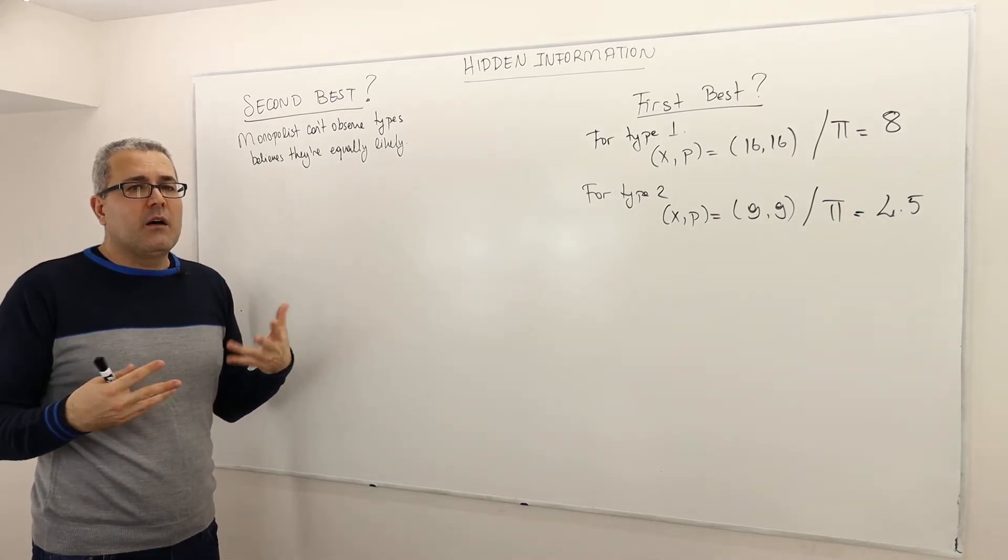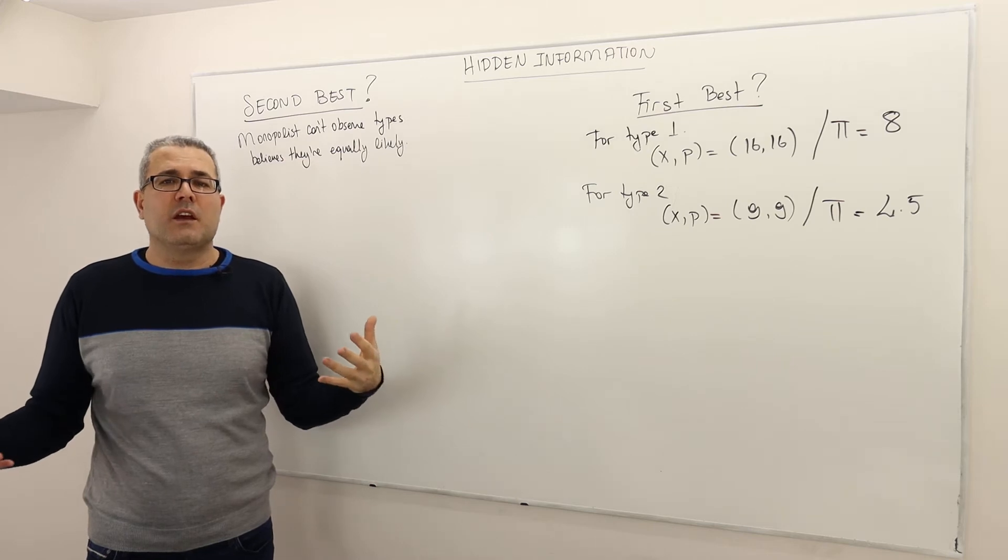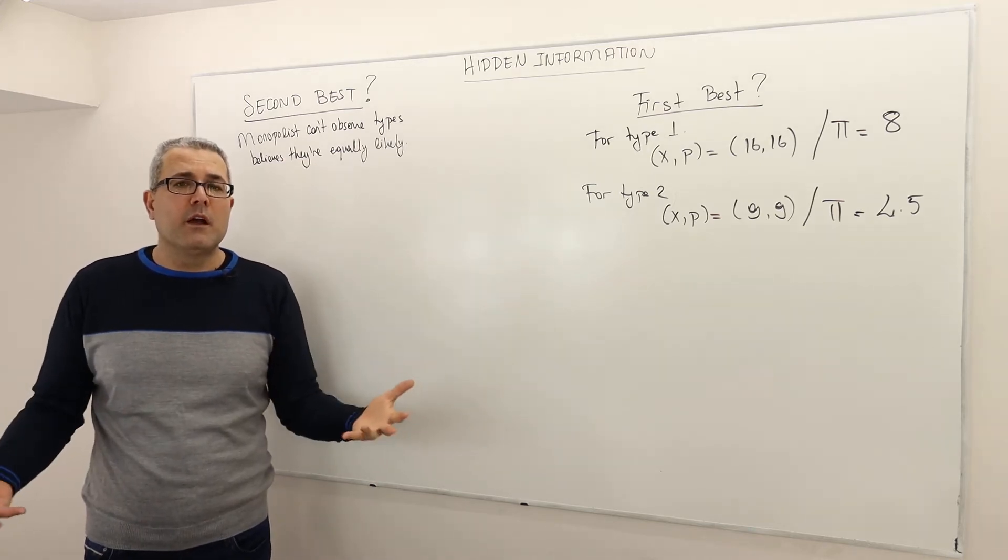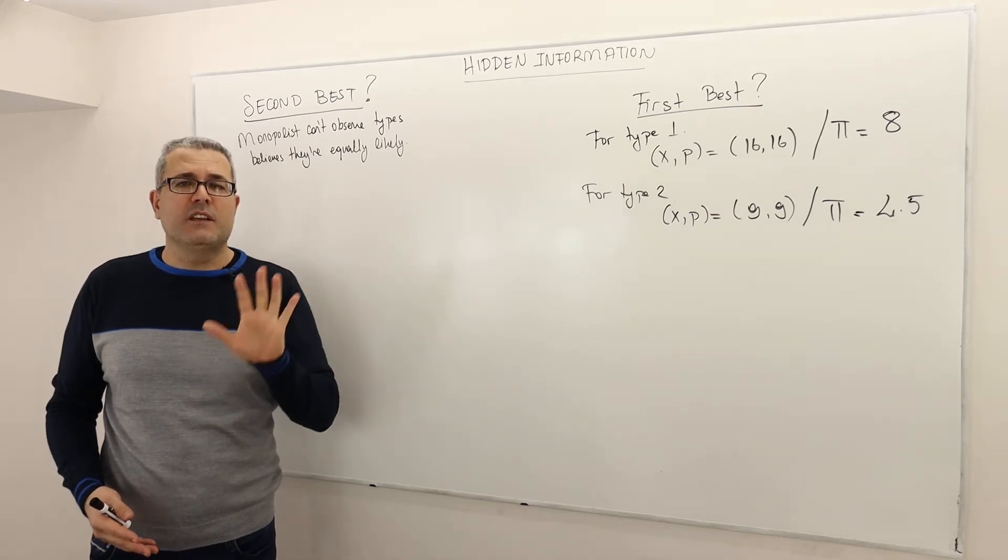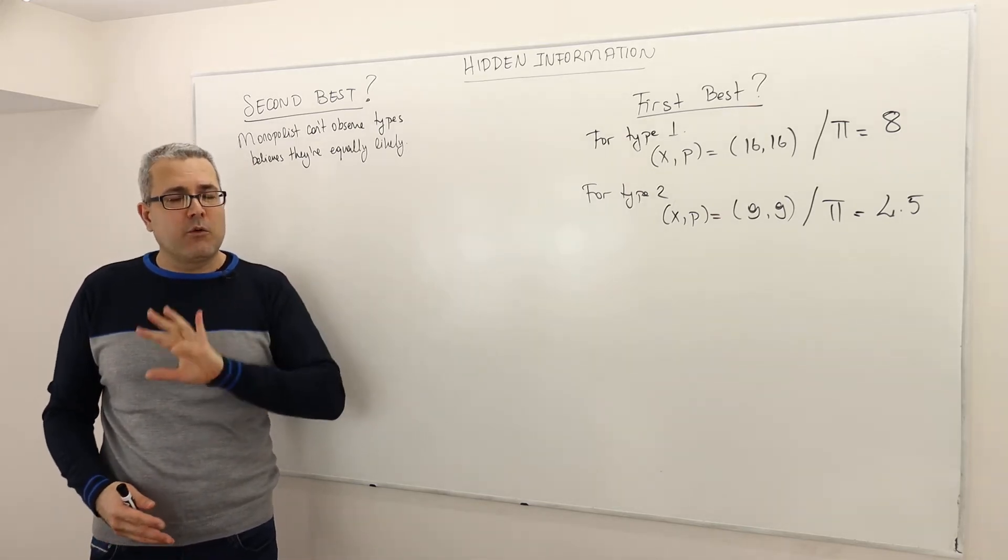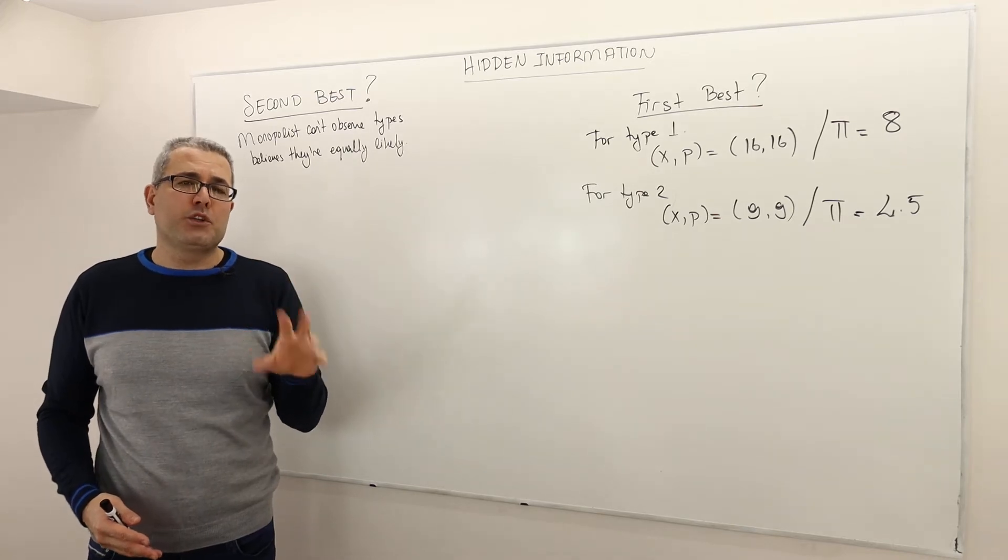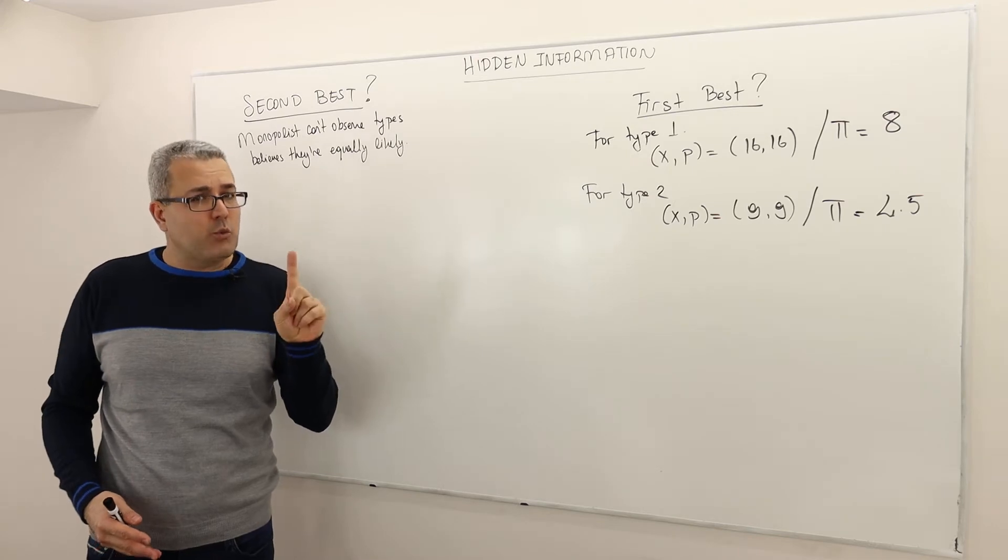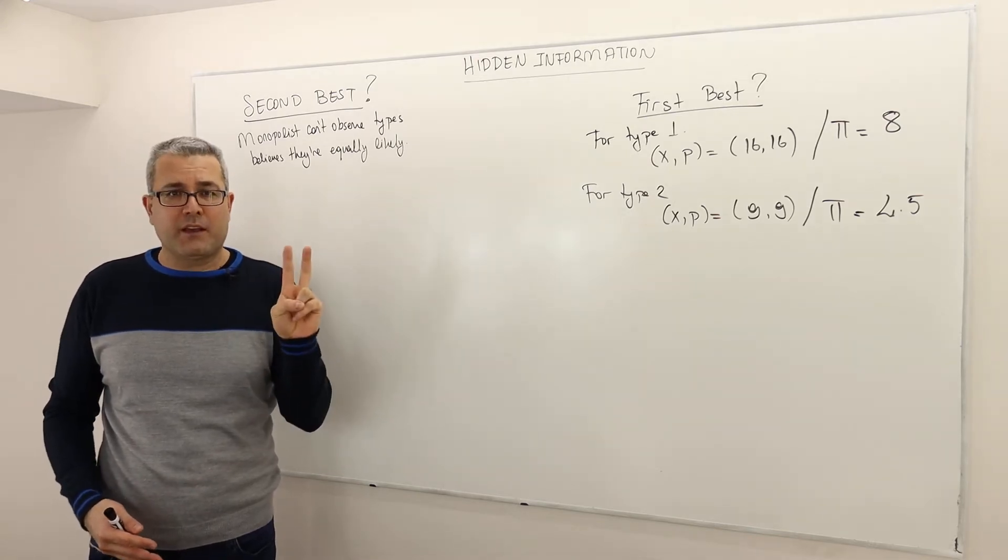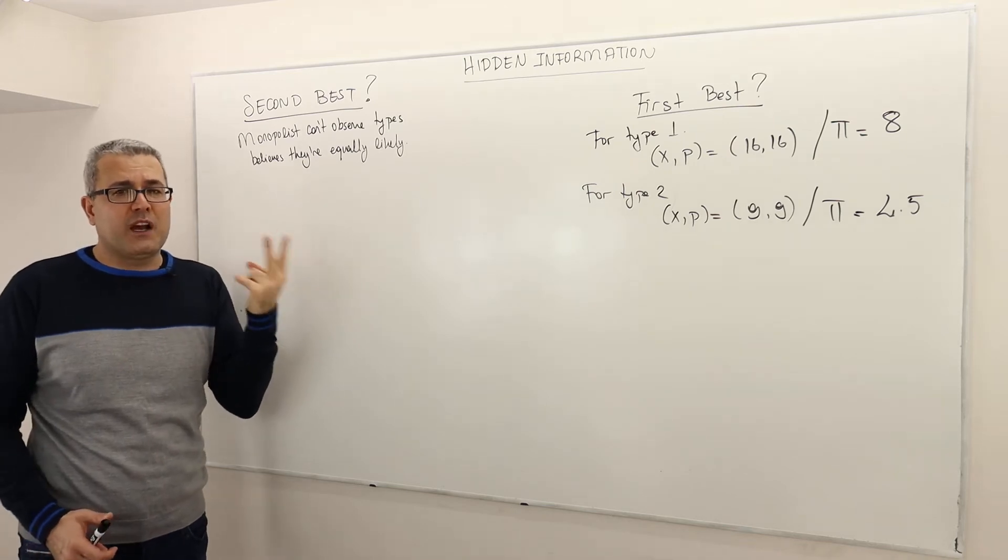So the question is, obviously the first question is how many packages should monopolist offer? We are not going to answer it, but the answer to this is kind of simple. I'm not going to go into the details of its argument, but the monopolist should offer two packages, only two packages.